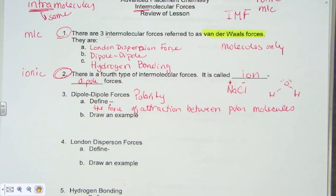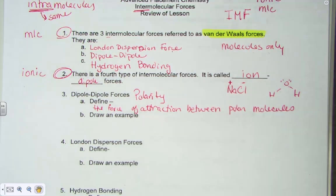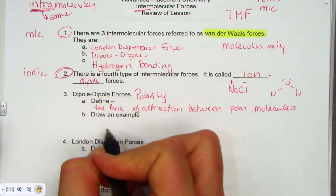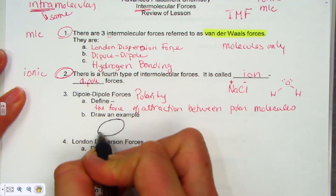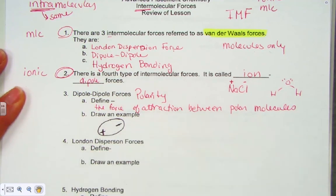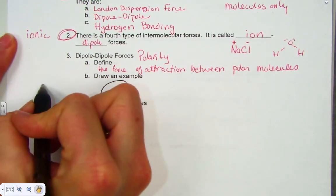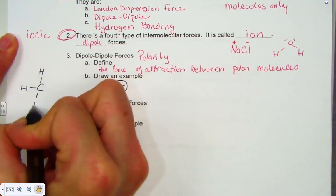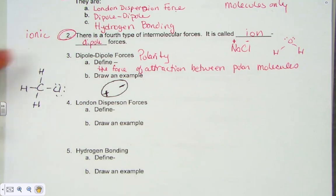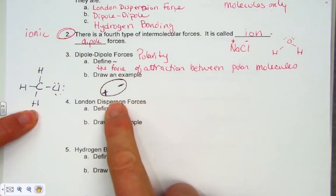Polar means opposites attract. If I have two polar molecules with regions that are positive and negative, how might they align to create dipole-dipole attractions? For example, I'll draw a molecule like CH₃Cl — methyl chloride — representing areas of partial positive and partial negative charge, with the chlorine side being more electron-rich and negative.